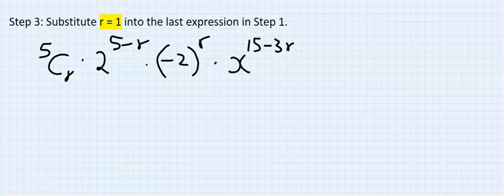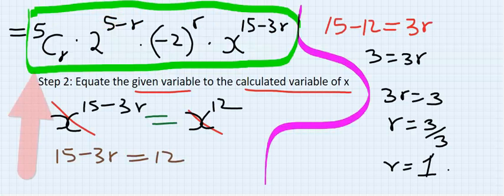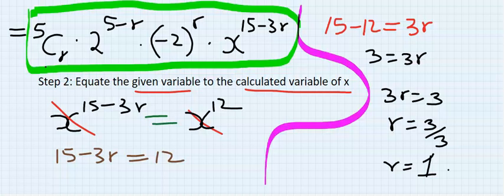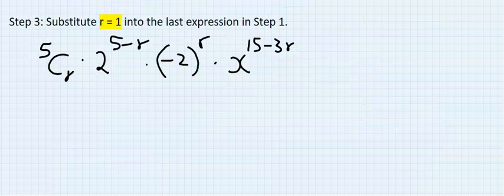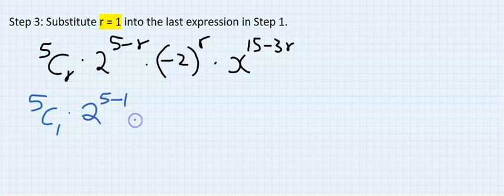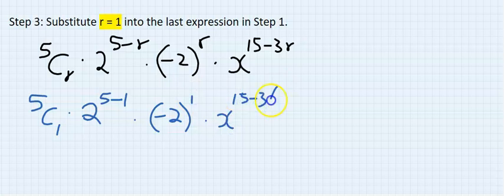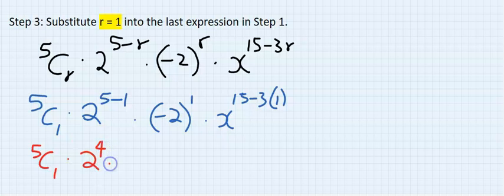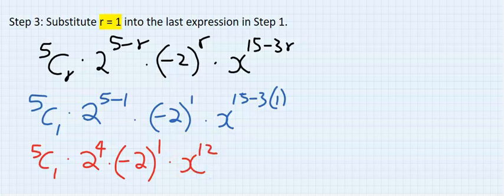Step 3: Substitute r = 1 into the last expression from Step 1. Substituting r = 1 gives: 5C1 · 2^(5−1) · (−2)^1 · x^(15−3·1), which simplifies to 5C1 · 2^4 · (−2)^1 · x^12.